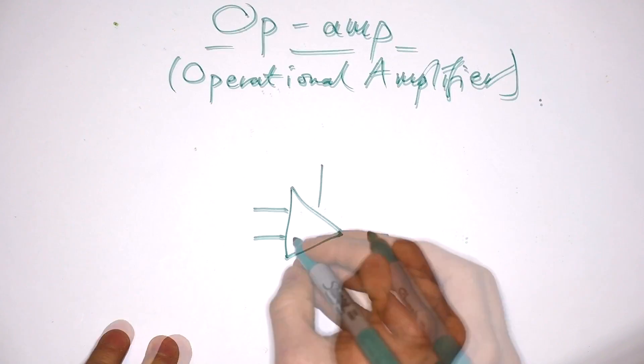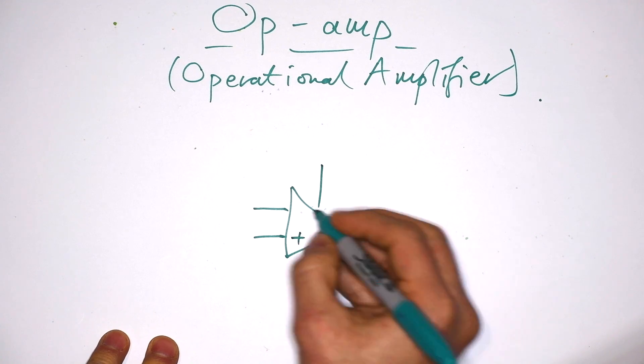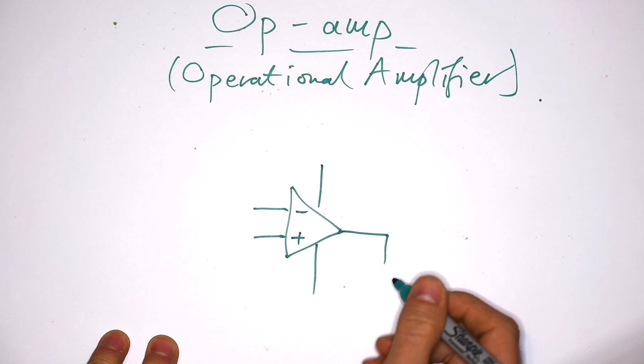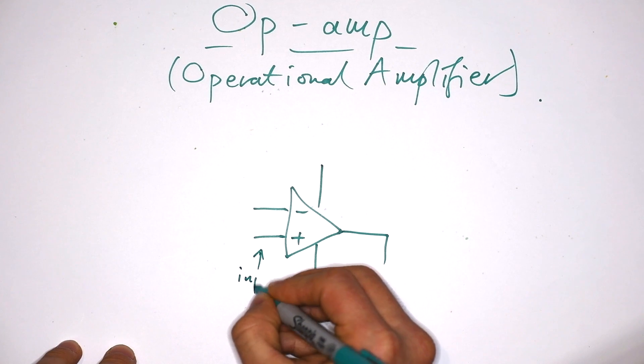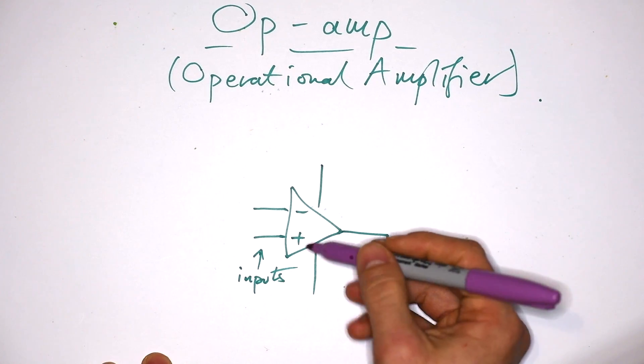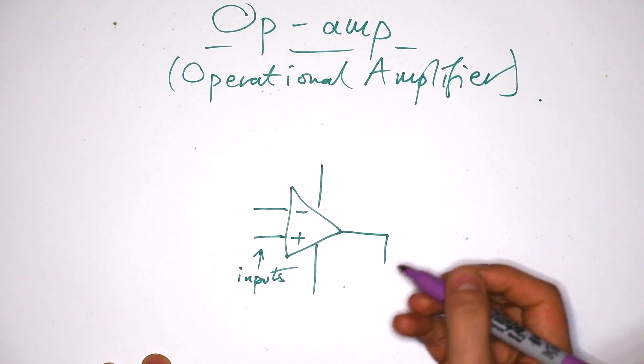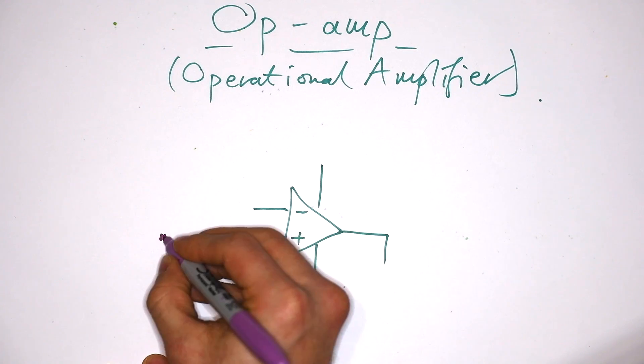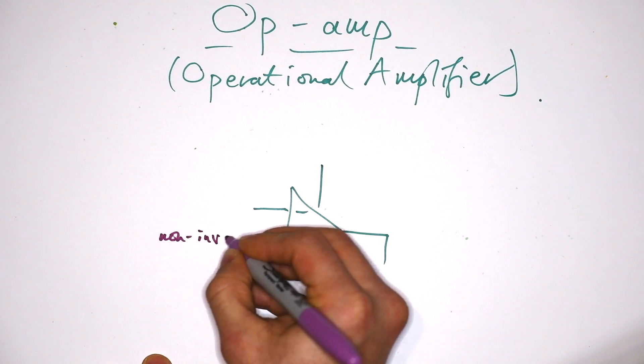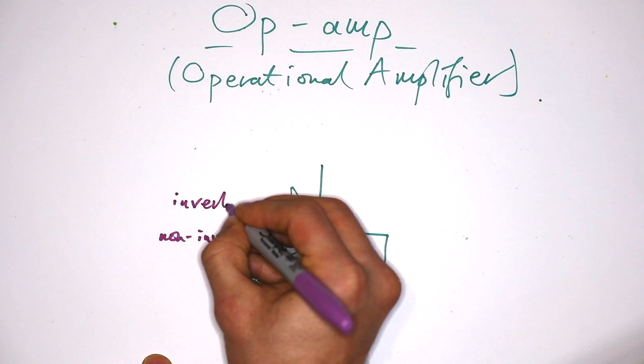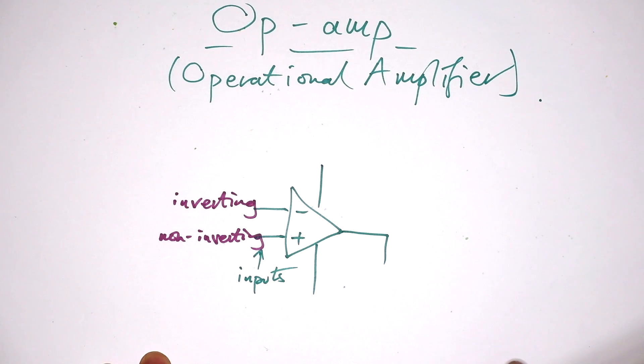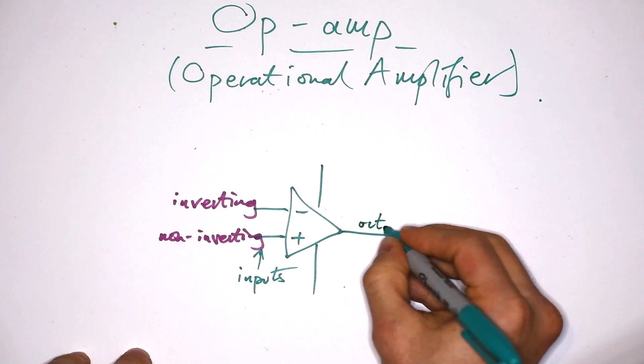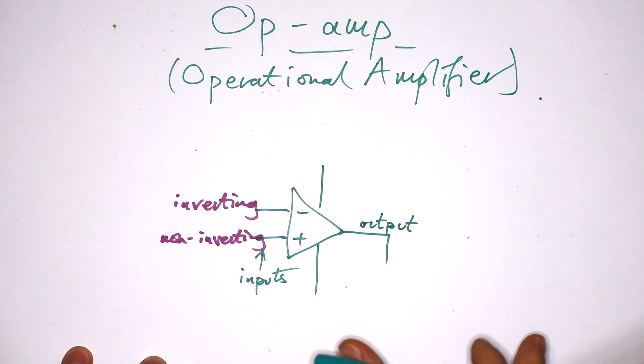This is how the component is drawn here. What we have are two inputs, and they are given the symbol plus and minus, so these are our inputs. You can just call these positive and negative inputs, but sometimes you might see them called the non-inverting input and the inverting input, and we'll get on to what that means in a bit. This is our output here. That's where the amplified output comes out of.